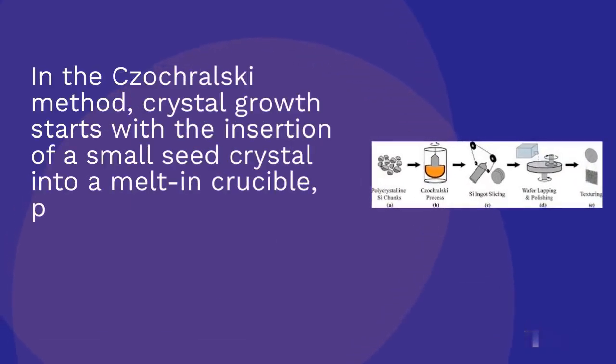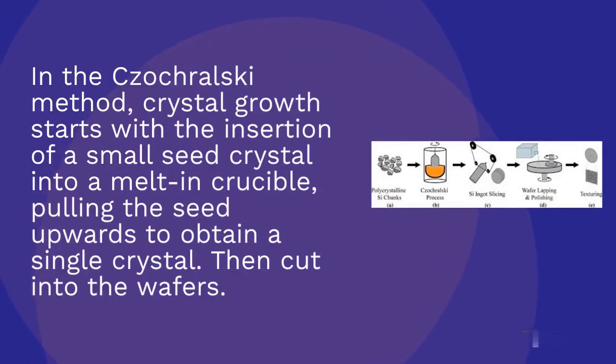In the Czochralski method, crystal growth starts with the insertion of a small seed crystal into a melt in crucible, pulling the seed upwards to obtain a single crystal, then cut into wafers.